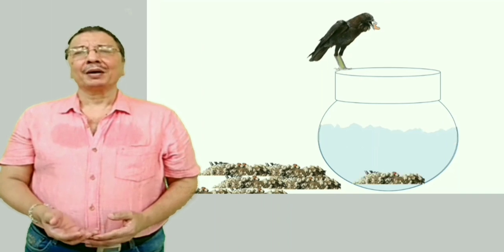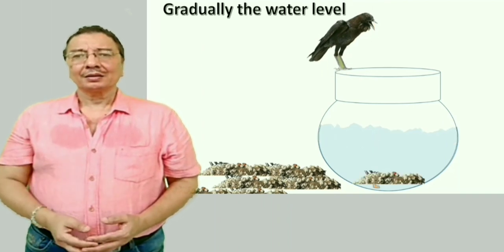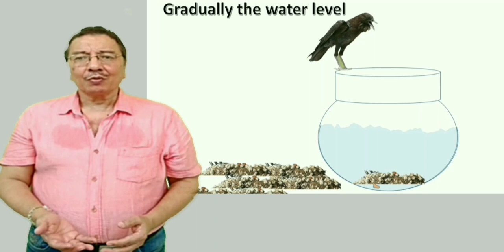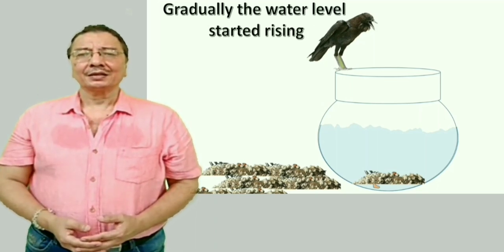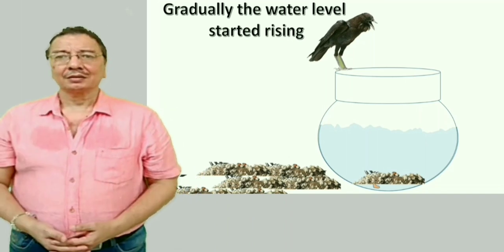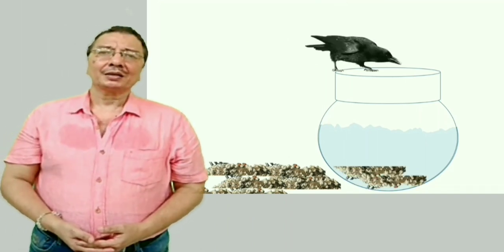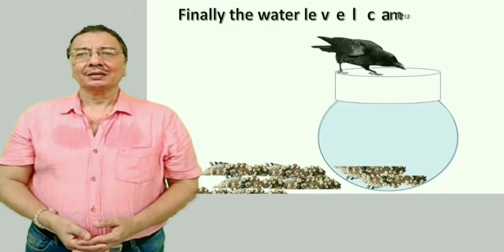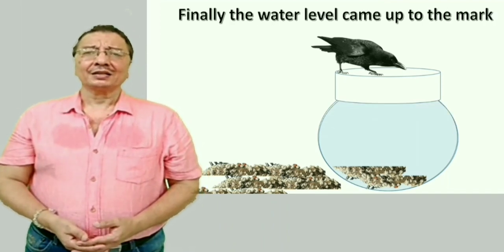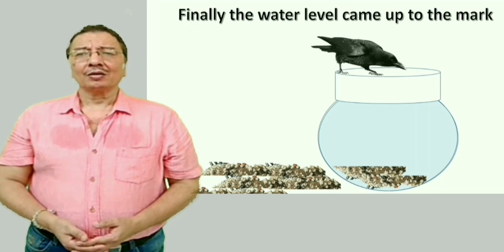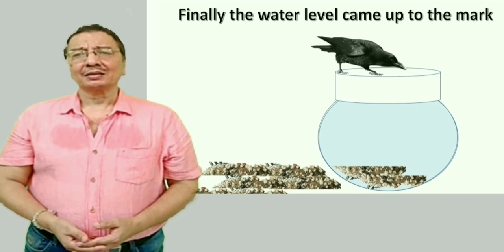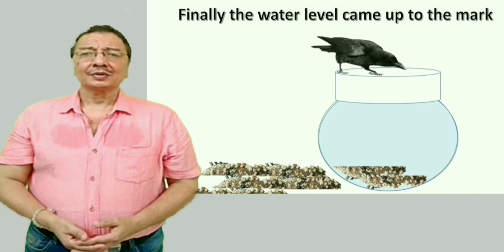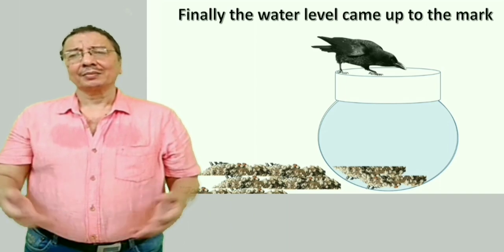Dhire dhire pani upar aane laga — Gradually, the water level started rising. 'Gradually' means dhire dhire. Ant mein pani upar tak aa gaya — Finally, the water level came up to the mark. 'Ant mein' means 'finally'. 'Up to the mark' means jahan tak chahiye wahan tak.